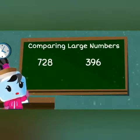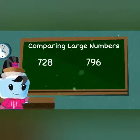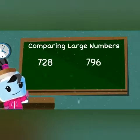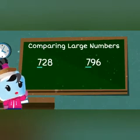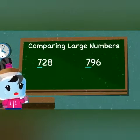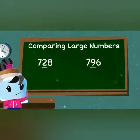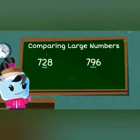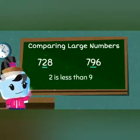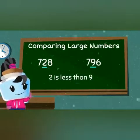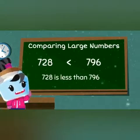How about if we change 3 to 7? Can you help me compare 728 and 796? Again, start with the hundreds place. Since both are 7, let's move to the next place value, which is tens. Let's compare 2 and 9. Clearly, 2 is less than 9. That means 728 is less than 796.